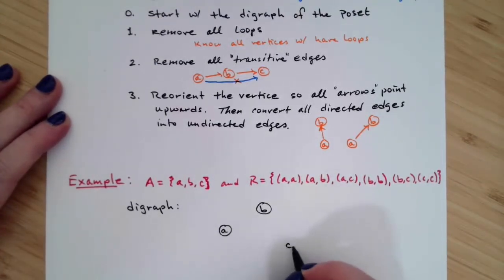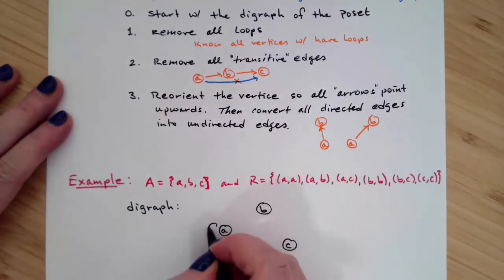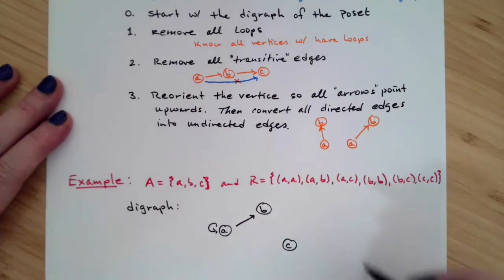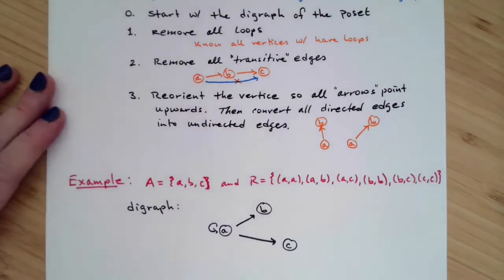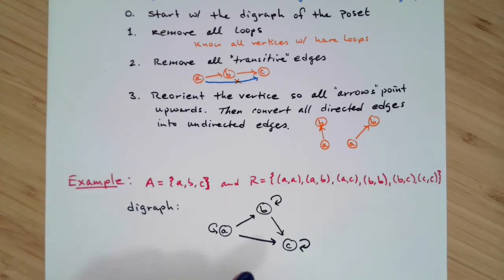Then we put in the appropriate edges, so we have A-A, A-B, and A-C, and then we do the exact same thing for each of the other ordered pairs in the partial order. So our digraph would then be this figure with all of those arrows.